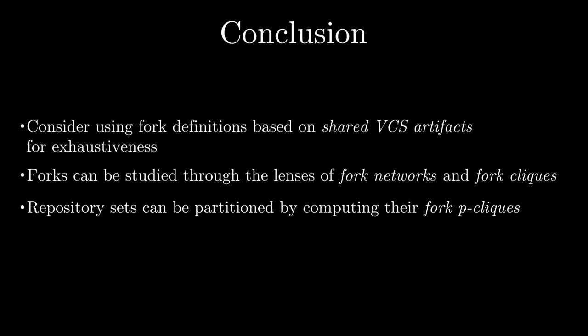We think there are a few main takeaways from this study. First, empirical studies looking at software forks should consider using fork definitions based on shared VCS artifacts — they can give the data more coverage and exhaustiveness, and make the study less susceptible to selection biases. If you have reasons to believe your results might be susceptible to the definition of fork you chose, it might be worth considering them as a threat to validity. Clusters of forks can be studied through the lenses of fork networks and fork cliques, depending on what the object of interest is. And finally, fork cliques are a useful way to partition repository sets in groups of repositories that are all forks of each other, notably when doing quantitative analysis of forks.